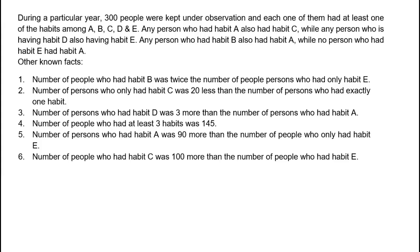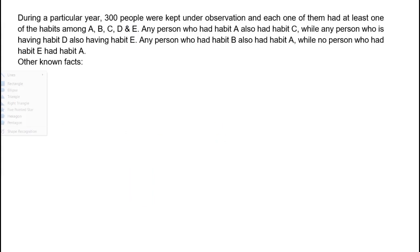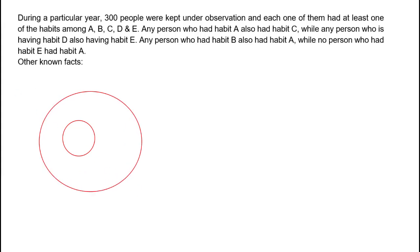Before we move ahead, let's draw the Venn diagram — there are five habits total, so five circles are required. I'll delete these statements for now. Let's draw the Venn diagram. The statement says any person who had habit A also had habit C. So this circle represents habit A and this circle represents habit C.